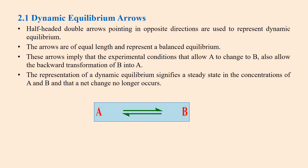As shown here, these are half-headed arrows used to represent dynamic equilibrium. Half-headed arrows pointing in opposite directions are used to represent dynamic equilibrium. When these arrows are of equal length, they represent a balanced chemical equation in a dynamic equilibrium state.